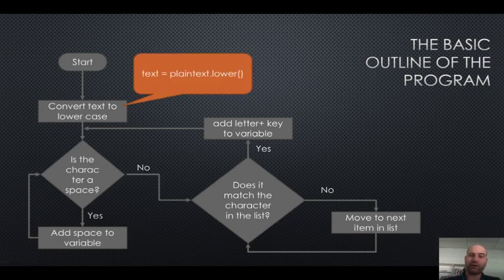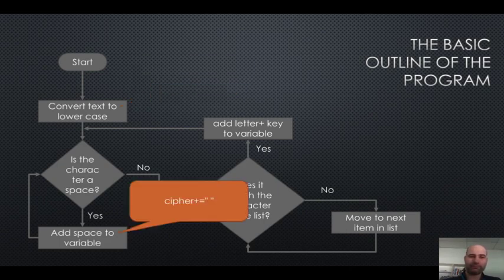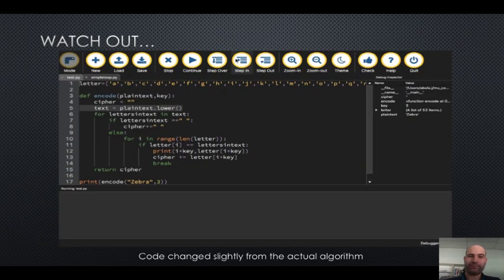So, text equals plain dot text dot lower. That's a lovely function built into Python. Cipher plus equals. That means it's adding it onto the variable. In this case, it's just adding a space onto the variable. Okay. One more thing.